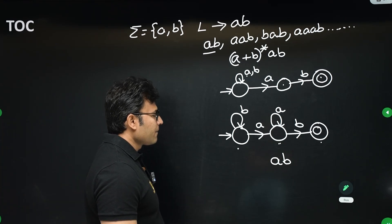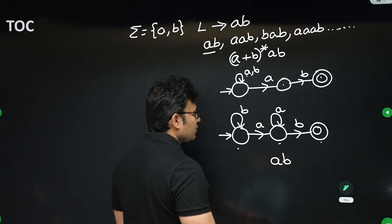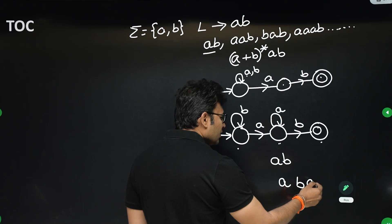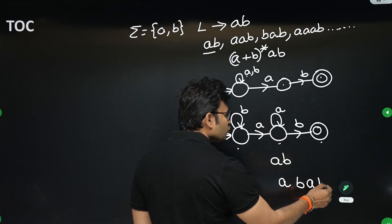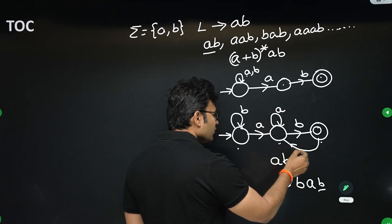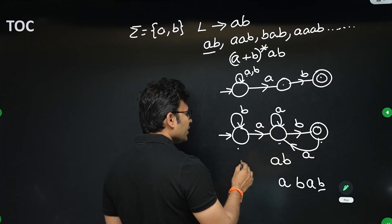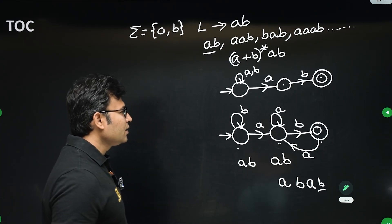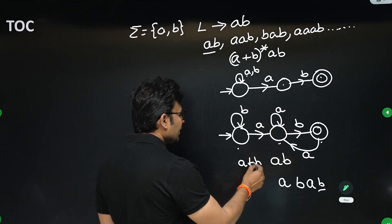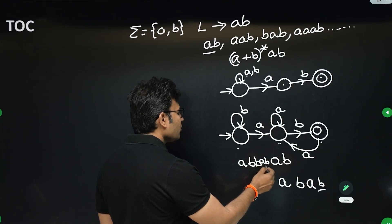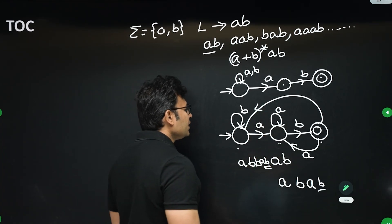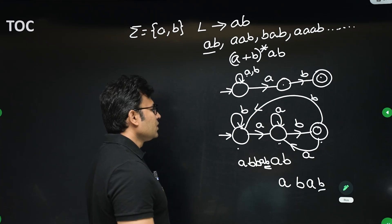We reach the accept state by seeing 'ab'. Now if we get another 'a', we should wait for 'b', so we go back and wait for 'b'. If we get a 'b' in the accept state, the entire sequence is spoiled — we have to go back to the start state and wait for 'ab' completely. The state diagram is now complete.